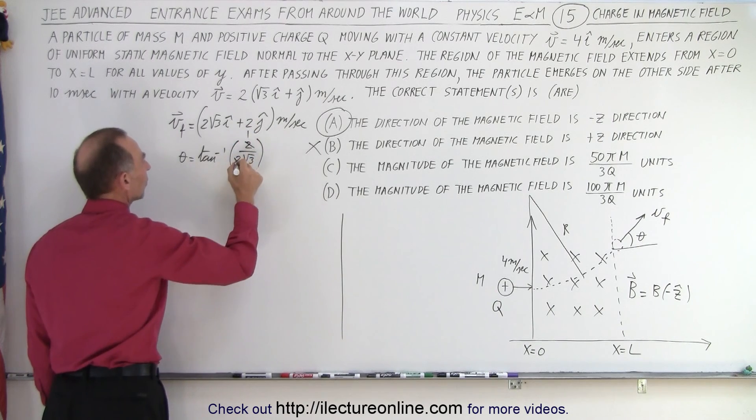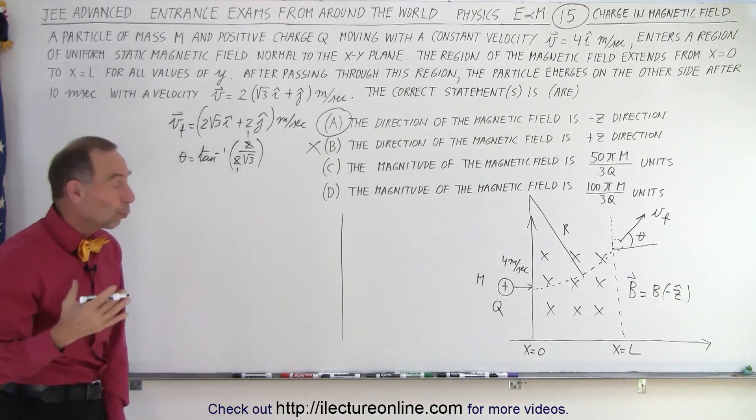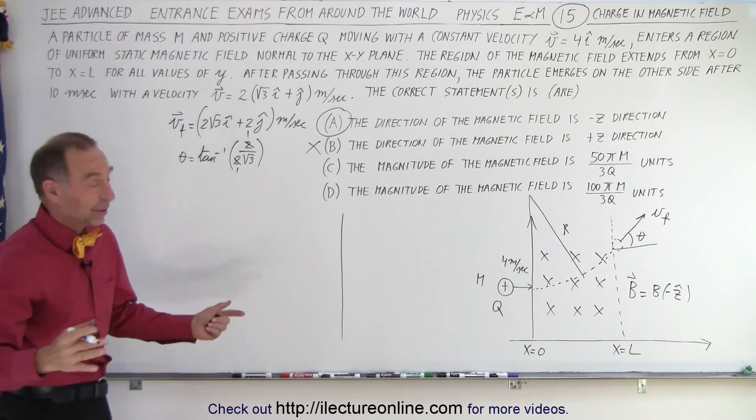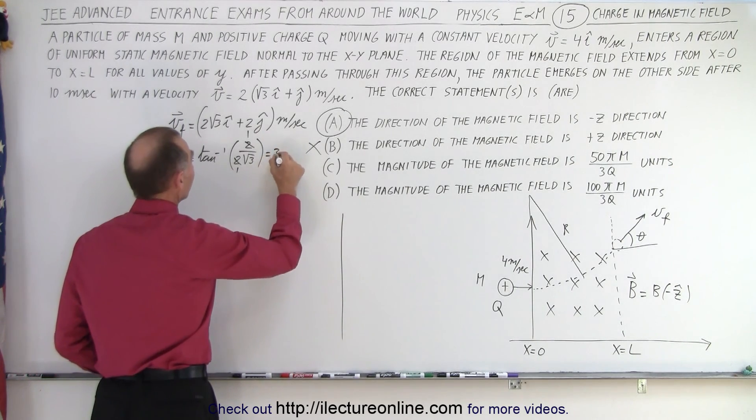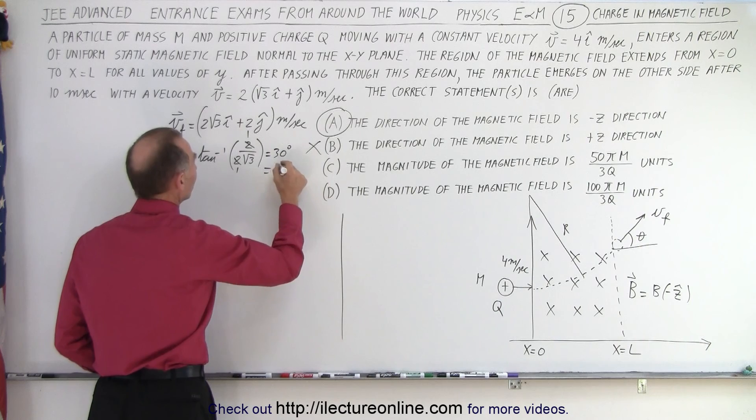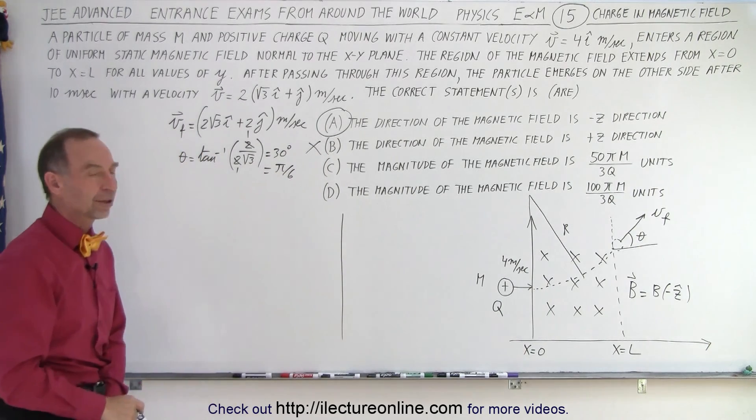The 2s cancel out so we have the arc tangent of 1 over the square root of 3, and we should remember that that has to be equal to 30 degrees, which means it's equal to pi over 6. So the angle we go through is pi over 6.